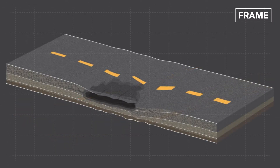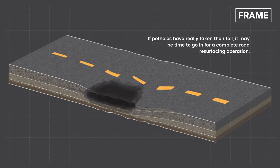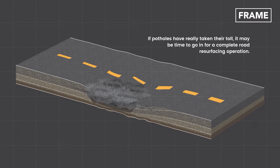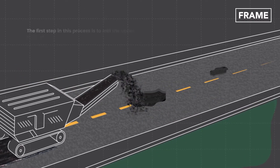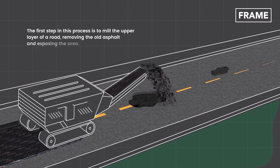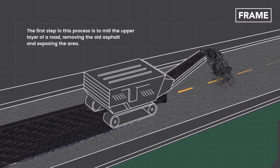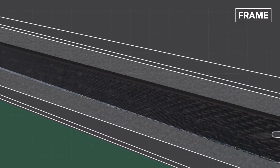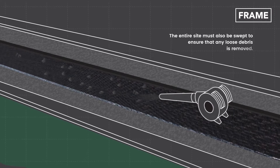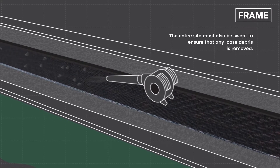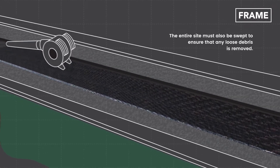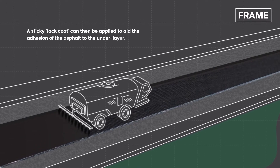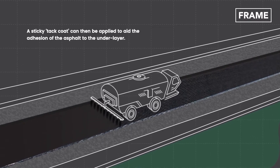If potholes and general wear and tear have really taken their toll, it may be time to go in for a complete road resurfacing operation. The first step in this process is to mill the upper layer of a road, removing the old asphalt and exposing the area. The entire site must also be swept to ensure that any loose debris is removed. A sticky tack coat can then be applied to aid the adhesion of the asphalt to the under layer.